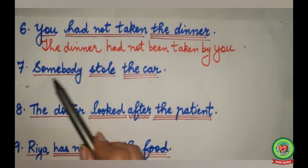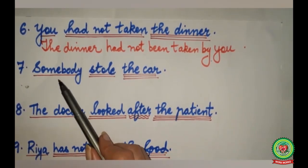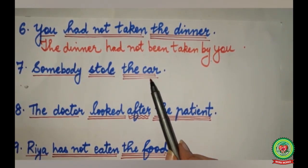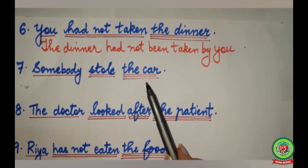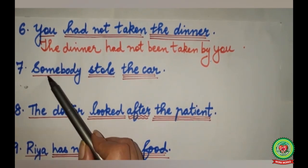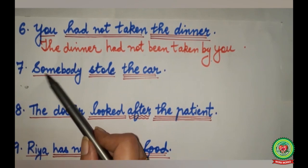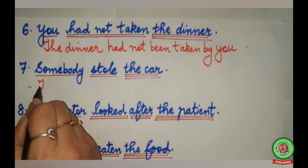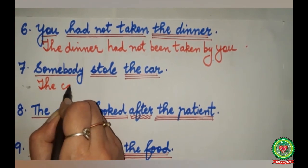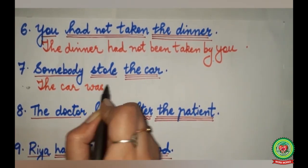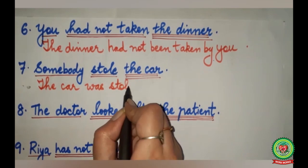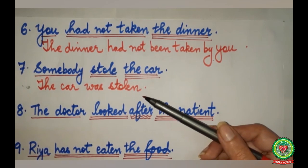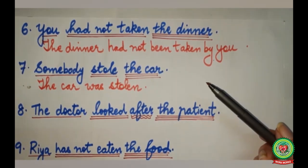Next sentence: Somebody stole the car. Here somebody is the subject, stole is the verb, the car is the object. As we discussed, if somebody is given as your subject, you can omit it while writing passive voice. So the answer is: The car was stolen. If you write by somebody it would also be correct, but omitting it is another valid way.